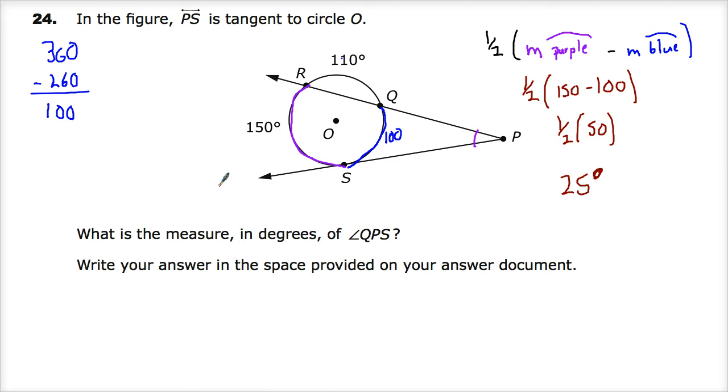All you need to do when you're given that secant and tangent is find the, this is called the far arc. And this is called the near arc, usually. So sometimes this is called the far arc, near arc theorem.